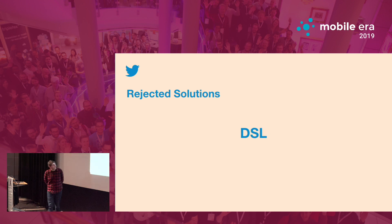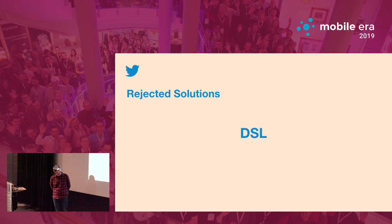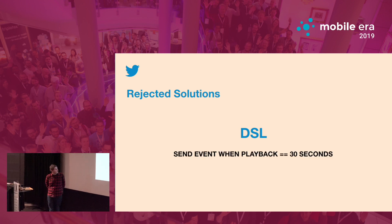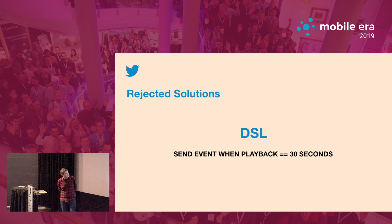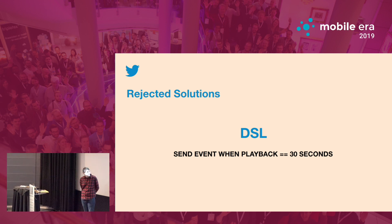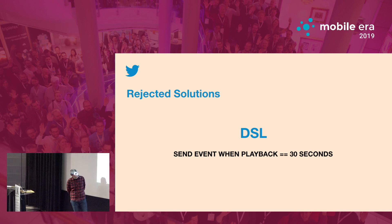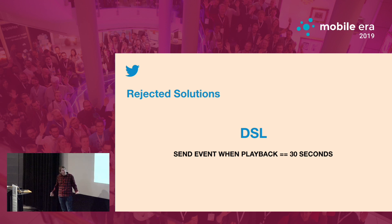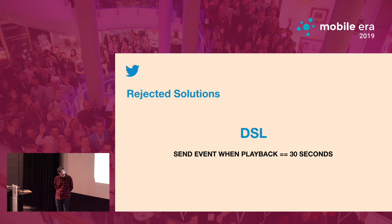We also looked at creating a DSL — a domain-specific language — where we just pass in a string and it figures out what it needs to do. But we quickly realized that's going to be hard to build and really difficult to maintain. It would allow others to create video metrics if they wanted to, but it wouldn't be reusable throughout all of Twitter, which was a drawback. That brings me into our first powerboat: JavaScript.